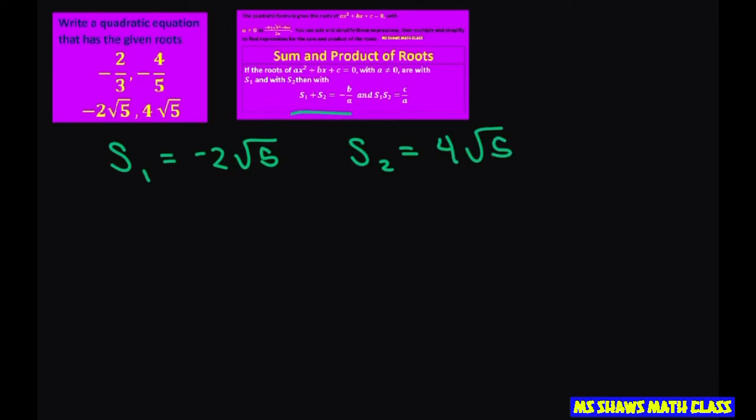So let's add those up. So solution one plus solution two. That's negative 2 square root of 5 plus 4 square root of 5. That equals 2 square root of 5, which is your negative b divided by a.